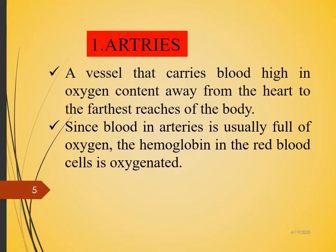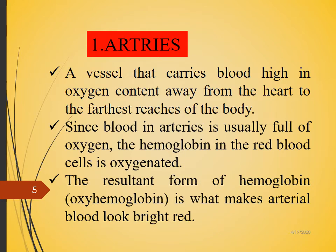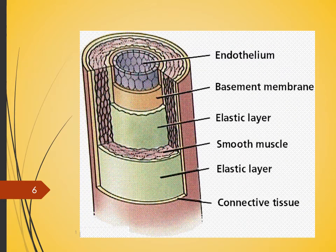Arteries carry oxygenated blood — except the pulmonary arteries, which carry deoxygenated blood from the right ventricle to the lungs. The oxygenated blood contains oxyhemoglobin, which makes blood look bright red. This is why brighter-colored blood always travels through the arteries. The largest artery is called the aorta, and smaller arteries are referred to as arterioles.